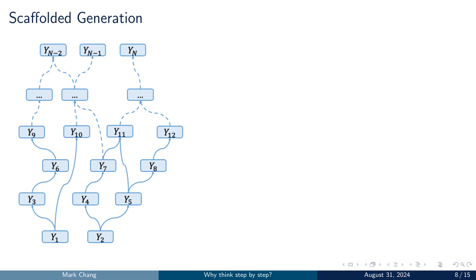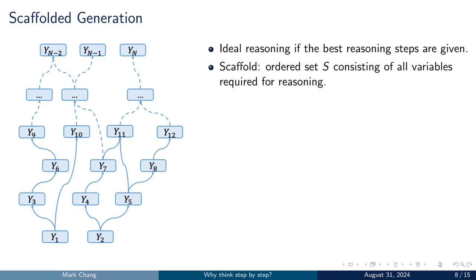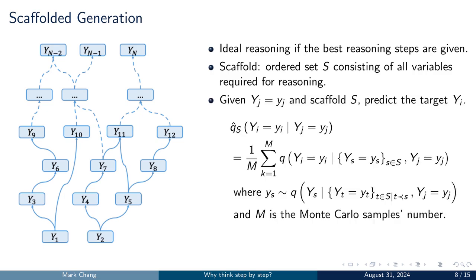Next, we introduce the second method, scaffolded generation. In this case, we assume that the ideal reasoning steps are known. These ideal reasoning steps are represented by an ordered set s, consisting of all intermediate variables arranged in topological order from the observed variable to the target variable. Given the observed variable y-j, its value, a scaffold s, and the target y-i, the scaffolded generation hat q-s is obtained by conditioning the model q on both the observed variable and the intermediate variables from the scaffold s. The values of these intermediate variables are sampled from the model q conditioned on their predecessors, and the value of hat q-s is derived from m iterations of Monte Carlo sampling.